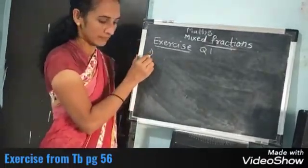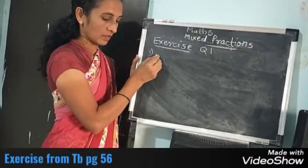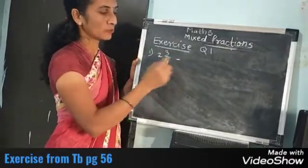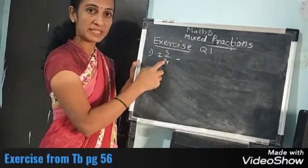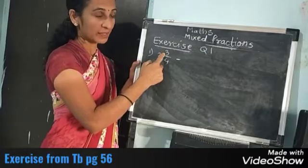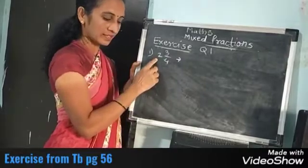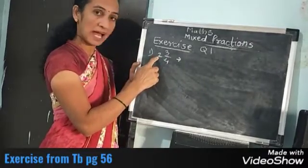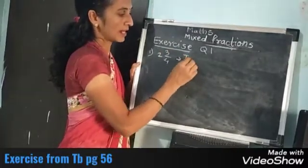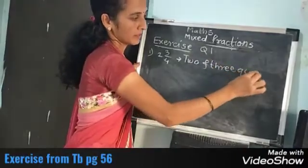See the first one: 2 and 3 upon 4. How to write it? 3 upon 4 means 3 quarters — that is a trick to keep in mind. So how to write it in words? Read the fraction: 2 and 3 quarters.